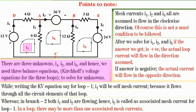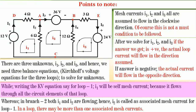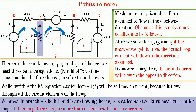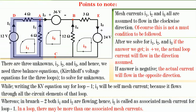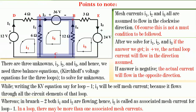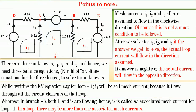There are three unknowns, i1, i2, and i3, and we need to write three Kirchhoff's voltage equations to solve this network. While writing the KVL equation for loop 1, i1 is called the self-mesh current. In branch 2, both i1 and i2 are flowing, so i2 will be the associated mesh current for loop 1. For loop 2, i2 will be the self-mesh current, and i1 and i3 will be the associated mesh currents.